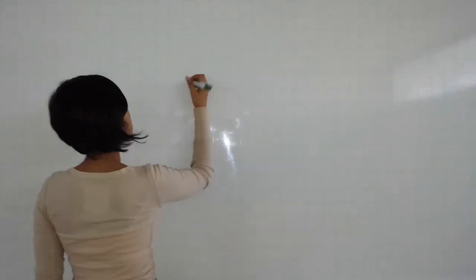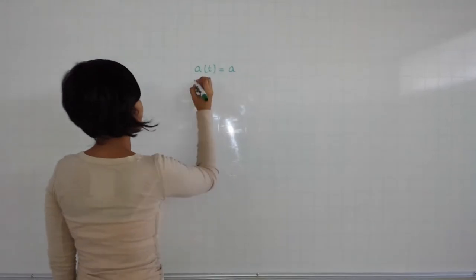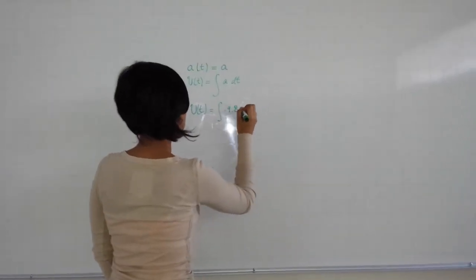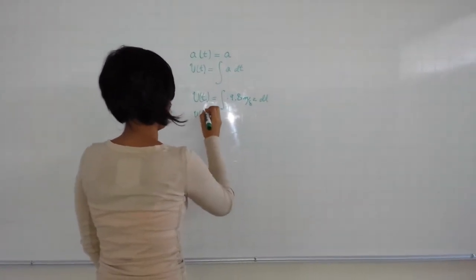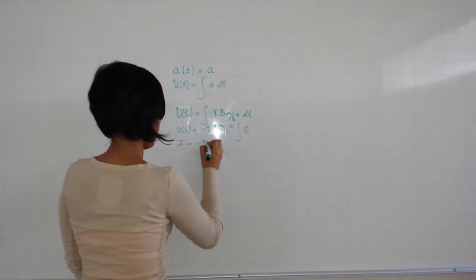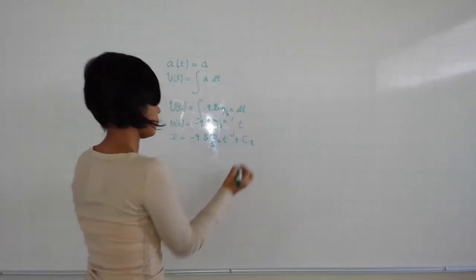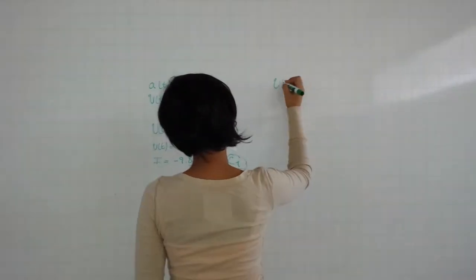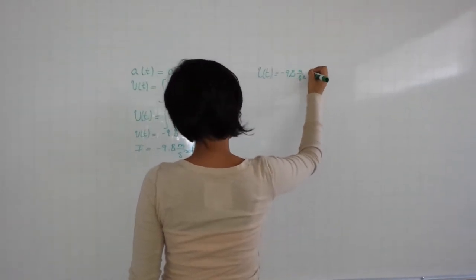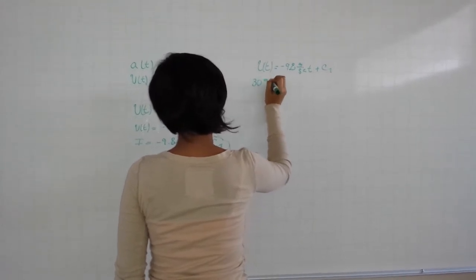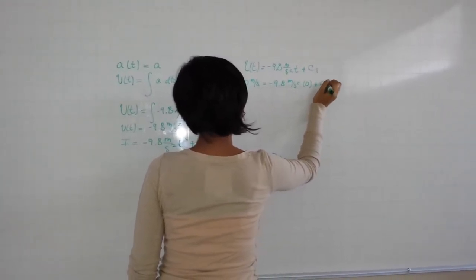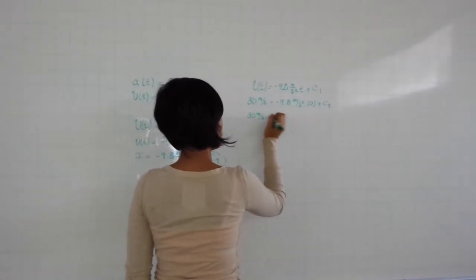Now, the acceleration function equals acceleration and the antiderivative of this equals the velocity function. When we solve this antiderivative, we have that velocity function equals minus 9.8 meters per second squared times t plus c1. We know the initial velocity is 30 meters per second, so we equal our function to that and substitute time by zero because our object hasn't moved yet. When we solve this, we get that c1 equals 30 meters per second.